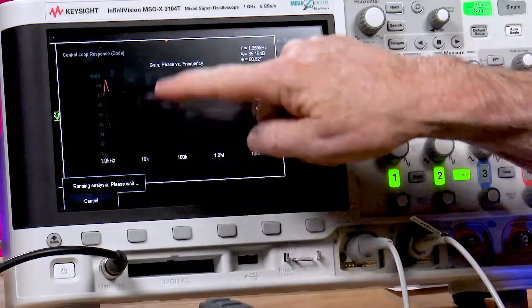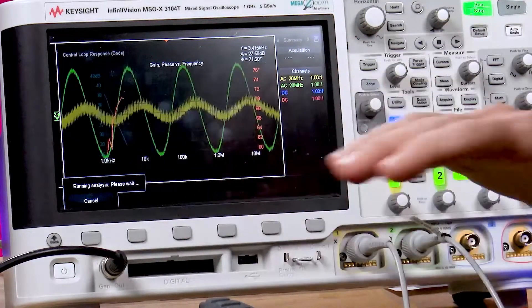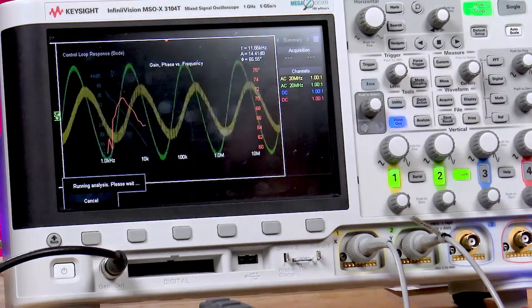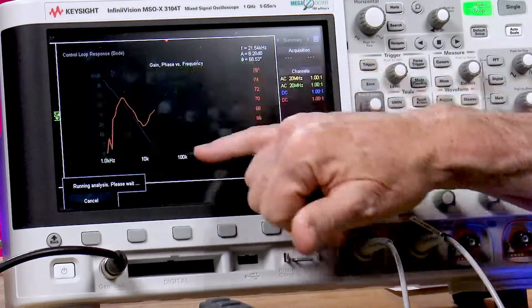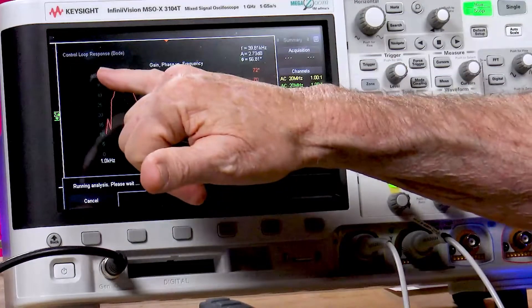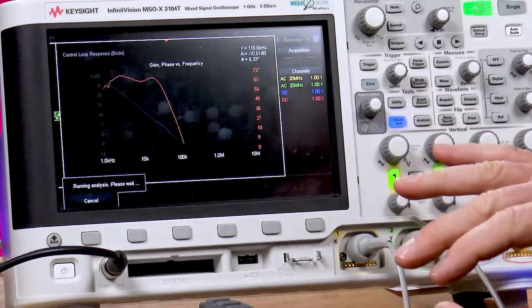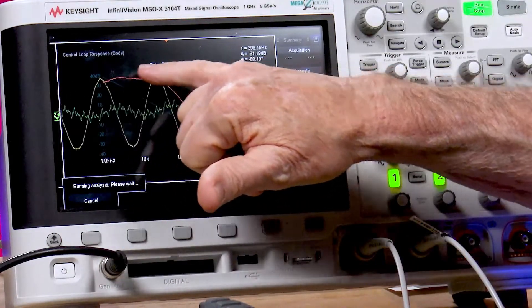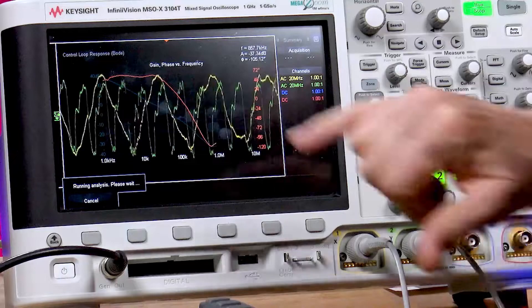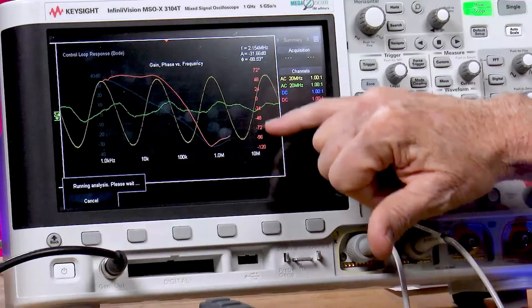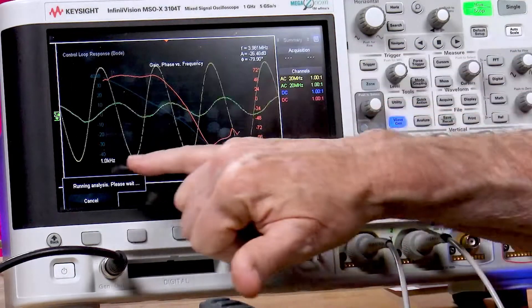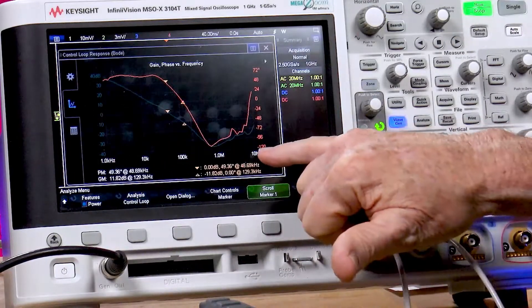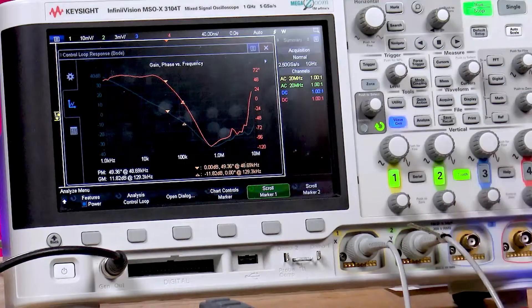The green waveform is V out. The yellow waveform, which looks very noisy, is actually switching noise on the output of the power supply. That is V in. The blue trace you see creeping across screen, that's the gain trace. The red trace is the phase trace. You can read the gain on the left and the phase on the right. You can see the grid here goes from 1 kilohertz to 10 megahertz.